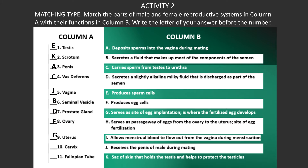For number ten, the cervix allows menstrual blood to flow out from the vagina during menstruation. And last, the fallopian tube serves as the passageway of eggs from the ovary to the uterus, and it is where fertilization of eggs happens, letter H.